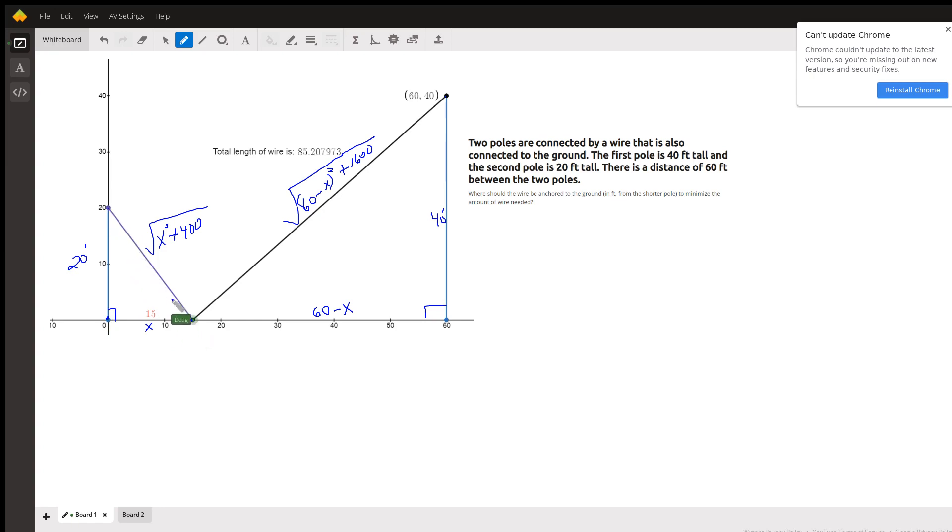This distance has to be the square root of x squared plus 400. And similarly, this distance has to be 60 minus x. This distance remains constant at 40, so the length of this wire is the square root of 60 minus x quantity squared plus 40 squared, or 1600.